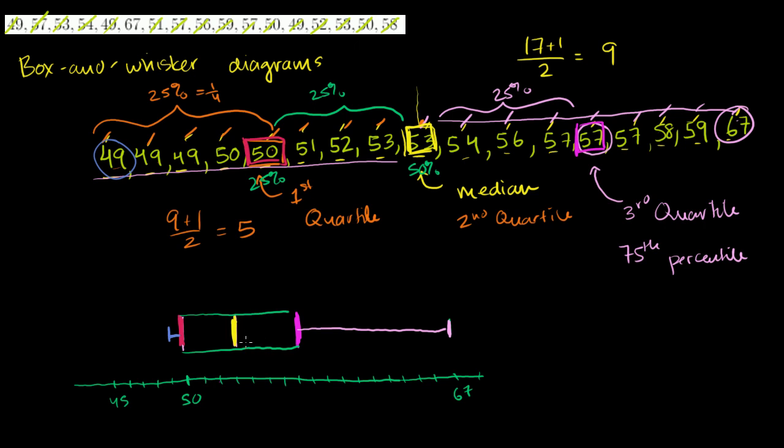So what you see when you look at a box and whisker diagram, you'd immediately say, okay, the middle number looks like 53. Most of the numbers, 50% of the numbers, are between 50 and 57. So most of them are squunched up over here. But the entire range goes all the way to 67, but it doesn't go too much below the inner quartile range. So hopefully that gives you a good overview. And now when you see these in stock charts, you'll have a good understanding of what they're telling you.